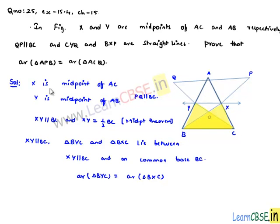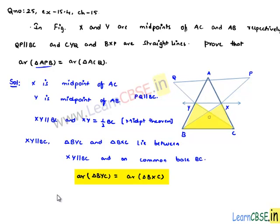Now, in order to get triangle APB, from the base part we need triangles BOY and BOX. So in order to get BOY and BOX, we need to eliminate the area of triangle BOC. So we subtract the area of triangle BOC from both sides.